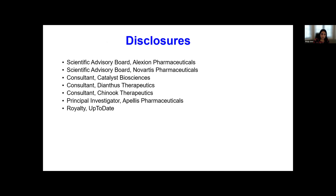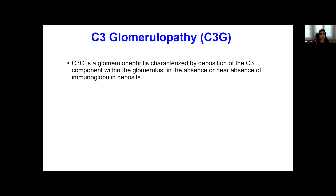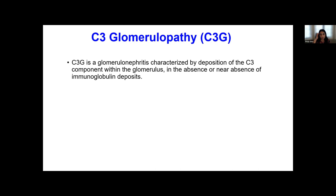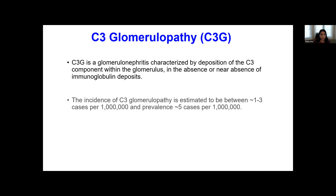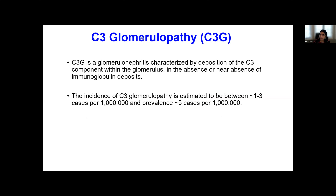So these are my disclosures. C3 glomerulopathy, as you all know, is a glomerulonephritis. It's characterized by the deposition of the C3 component of the complement within the glomerulus in the absence or near absence of immunoglobulin deposits. We'll talk about in detail on how and why this makes sense. In terms of the incidence of C3G, it is estimated to be about one to three cases per million, and the prevalence is about five cases per million.